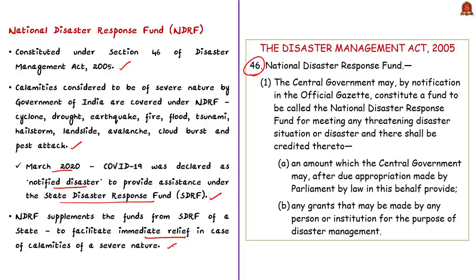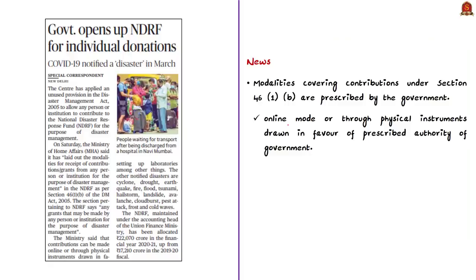NDRF is operated by the Central Government to provide immediate relief to people affected by severe calamities. Based on Section 46 of the Disaster Management Act of 2005, an amount shall be provided by the Central Government after due appropriation made by Parliament. Any grants or contributions made by any person or institution for disaster management shall also be credited to the NDRF. Contributions can be made online or through physical instruments drawn in favor of the prescribed authority of government. These funds are used for treatment of patients and logistics such as quarantine centers and setting up of laboratories.